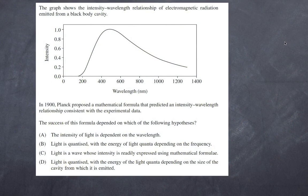The graph shows the intensity-wavelength relationship of electromagnetic radiation emitted from a black body cavity. In 1900, Planck proposed a mathematical formula that predicted an intensity-wavelength relationship consistent with experimental data. The success of this formula depended on which hypothesis? Is it A: the intensity of light is dependent on the wavelength? Is it B: that light is quantized with energy of light quanta depending on frequency?